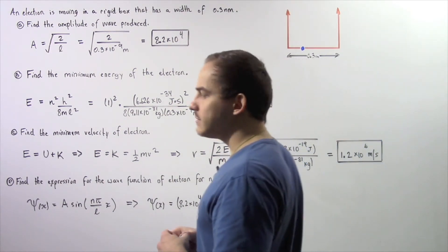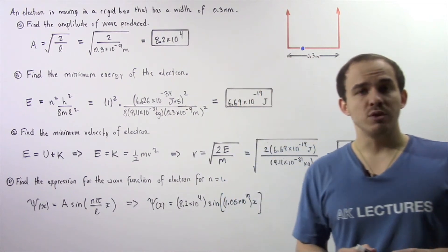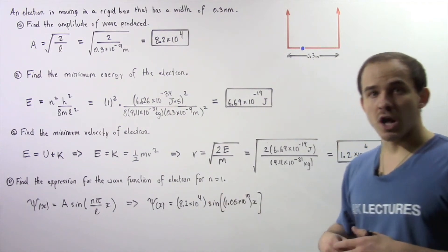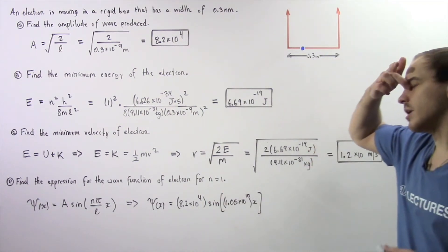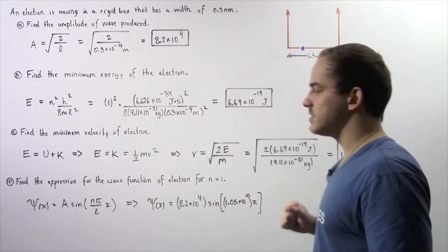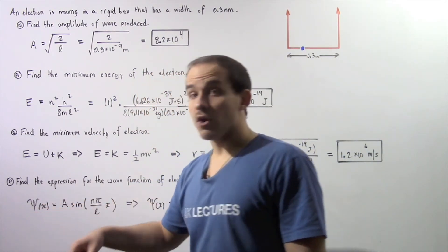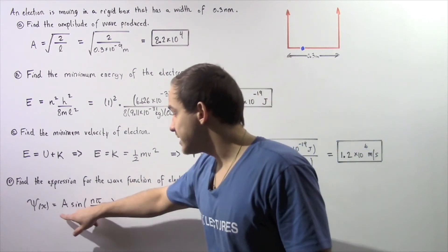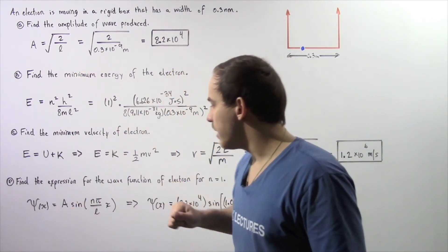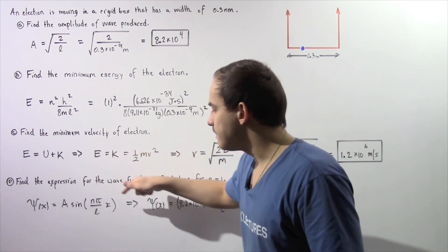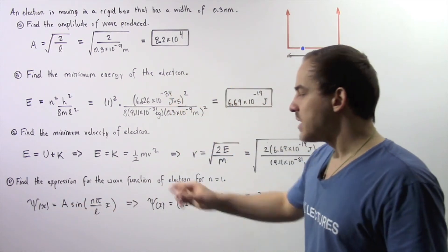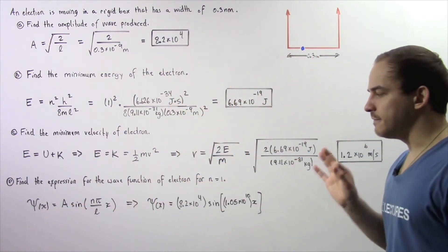Finally, let's move on to part D. In part D we want to find the expression for the wave function of an electron with a quantum number of n equals 1. We use the equation: psi of x equals A, the amplitude found in part A, multiplied by sine of n pi divided by L, multiplied by x, where x is our variable and everything else is fixed.